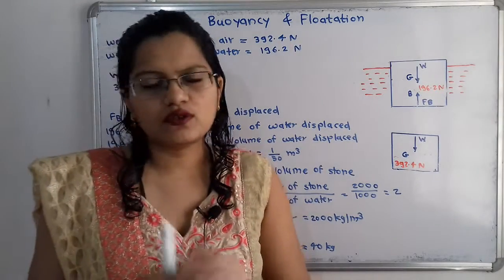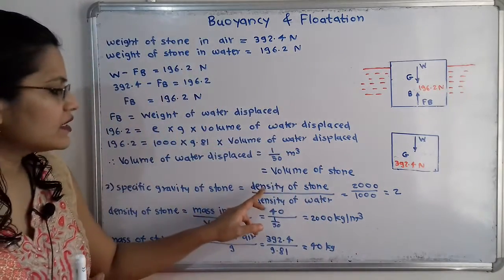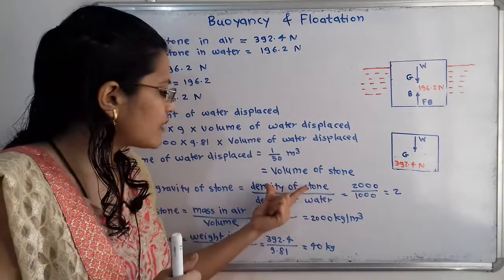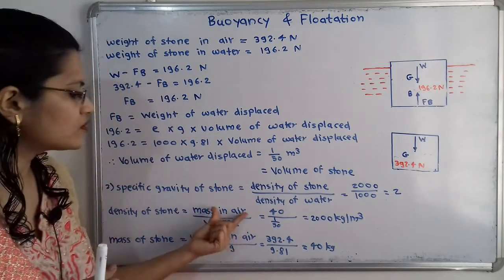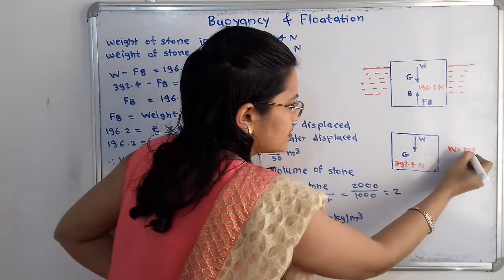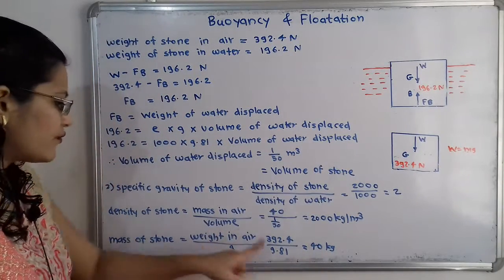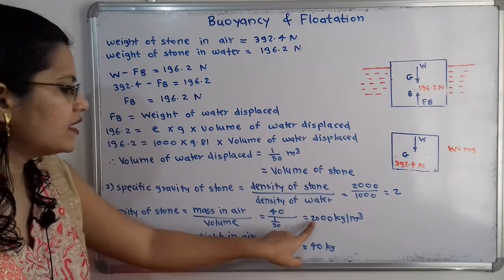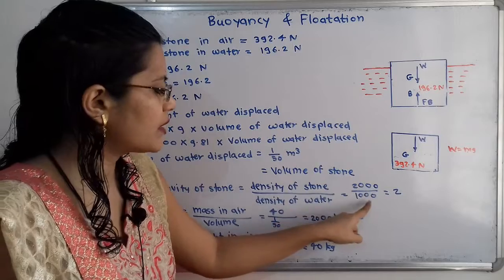Next, we calculate the specific gravity of the stone using the formula: specific gravity = density of stone divided by density of water (1000 kg/m³). Density of stone = mass divided by volume. Mass = W/g = 392.4 / 9.81 = 40 kg. Volume of stone = 1/50 m³. Therefore, density of stone = 40 / (1/50) = 2000 kg/m³. Specific gravity = 2000 / 1000 = 2. That is the final answer.